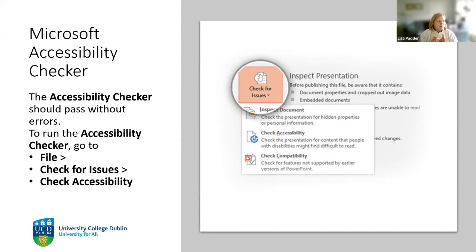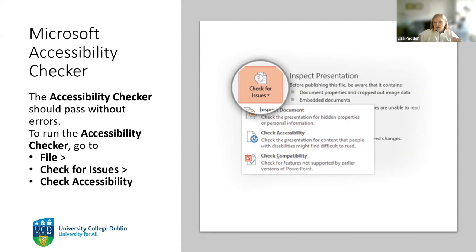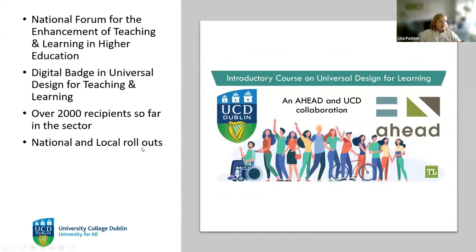You simply go to File, Check for Issues, Check Accessibility, and it will walk you through everything you need to do — whether that's alternative text or heading styles. It's really useful to use it in PowerPoint and in Word, and straight away you'll have your plus one in terms of making your materials more accessible.